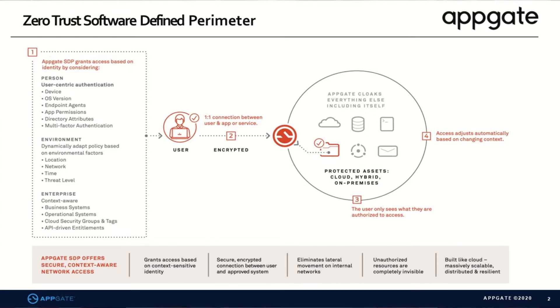SDP grants access based on identity, looking at many different factors across the people side, the device side, the environment, and the broader enterprise perspective. On the people and device side, it looks at what device is being used, the operating system, what endpoint protection solution is installed and whether it's up to date. It also enforces role-based access control, attribute-based access control, LBAC for modern labeling capabilities, and of course multi-factor authentication.